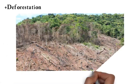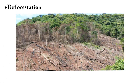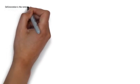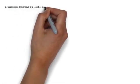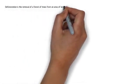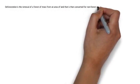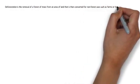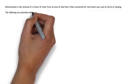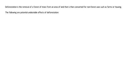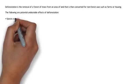Deforestation. Deforestation is the removal of a forest of trees from an area of land that is then converted for non-forest uses such as farms or housing. The following are potential undesirable effects of deforestation.